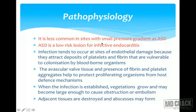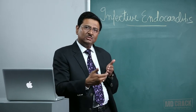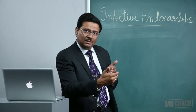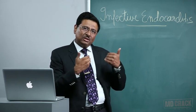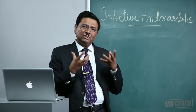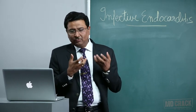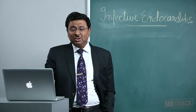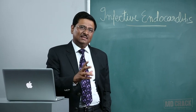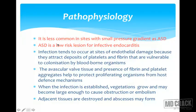Infective endocarditis is less common in sites with a small pressure gradient, such as atrial septal defect. In MCQs listing VSD, coarctation of the aorta, and ASD, remember that ASD has a lower pressure difference between the atria. So ASD is the knockout choice — it is a low-risk lesion for the development of infective endocarditis.